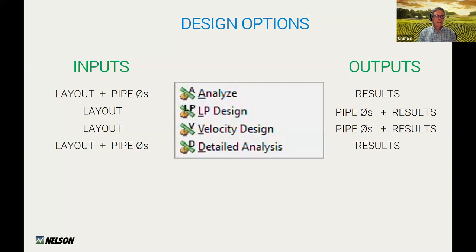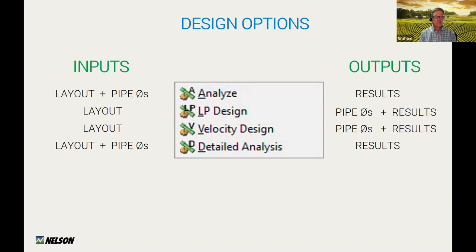Two of these options give you pipe diameters and give you the results — pressures and flows. Those are LP design and velocity. You need a layout with blocks and mainline. Once you have the layout and use either LP design or velocity, IRR-CAD will give you the pipe diameters and the results. The other two — analyze and detailed analysis — are analysis methods. You need the layout and the pipe diameters already determined, and they will give you the hydraulic results: pressures and flows.